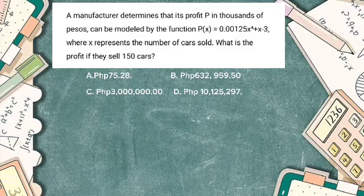Now we solve. 150 raised to the fourth power is equal to 506,250,000. Multiply by 0.00125 and it will be 632,812.50. Bring down 150 and 3.